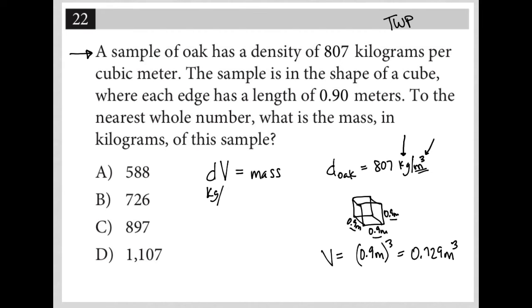Kilograms per meters cubed, in this case, multiply by meters cubed for volume, and the meters cubed cross out, and you're left with kilograms for mass as the unit.